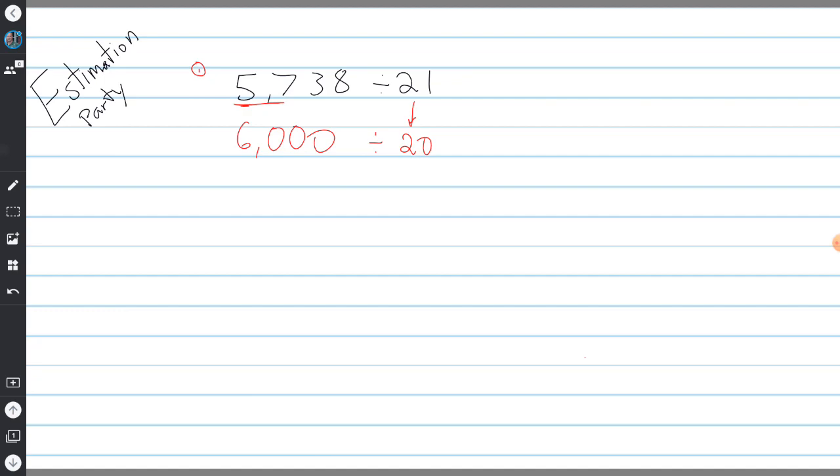I would change 5,738 to 6,000 and 21 to 20. Then you solve this: 2 goes into 6 three times, the zeros cancel out, leaving two zeros, so it will be 300. Check your work: 20 times 300 equals 6,000.